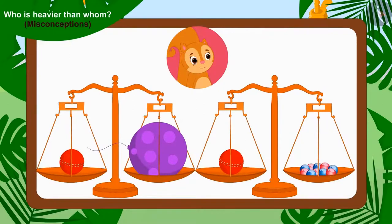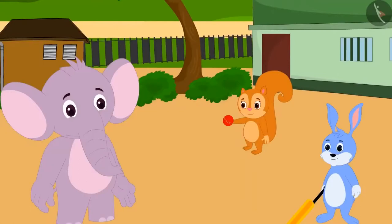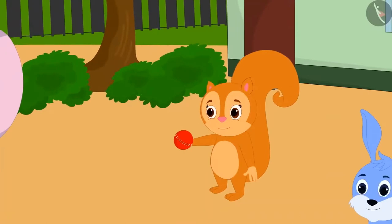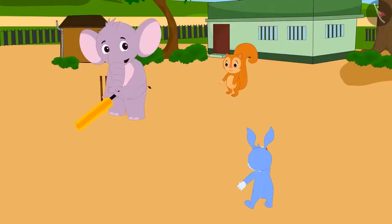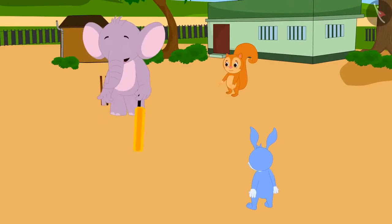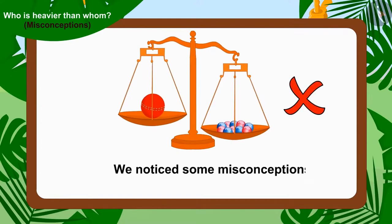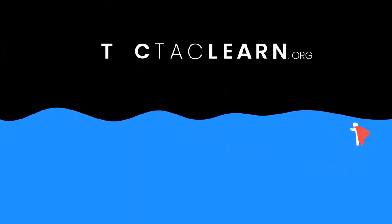Bunny and Appu agreed that Chanda's one cricket ball weighs more than Appu's balloon and Bunny's ten marbles. Finally, the three found out which game they had to play — they took Chanda's cricket ball and Bunny brought a cricket bat, and all three friends played cricket with great pleasure. Children, in this video we learned about some misconceptions related to comparing weight. We'll see you next time. Bye.